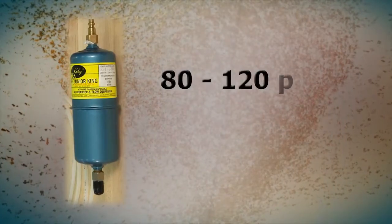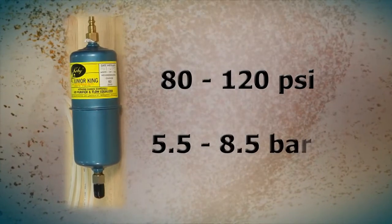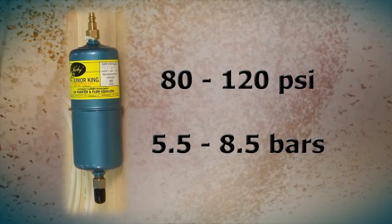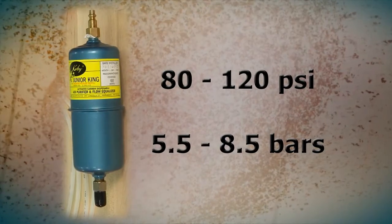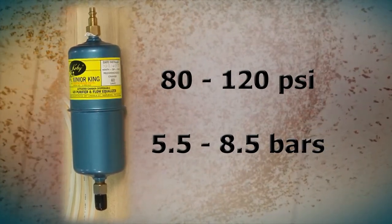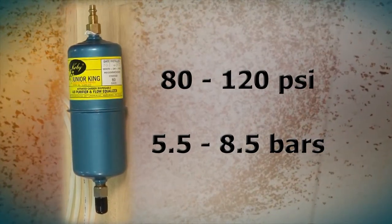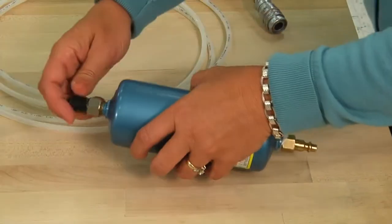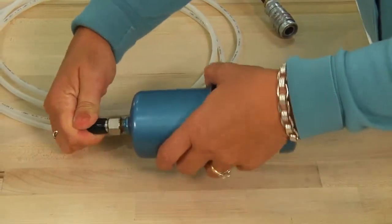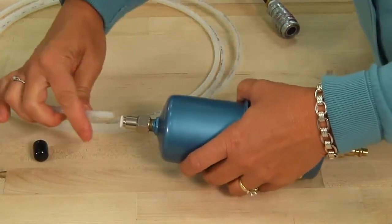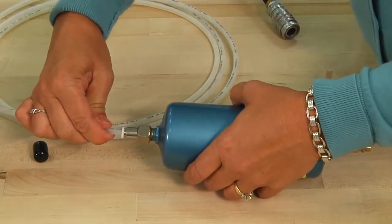First, hook up your air supply. Your polishing machine requires 80 to 120 PSI of clean, dry air or 5.5 to 8.5 bars. The Kobe air filter is set up on one end to hook directly to the polishing machine with the supplied quarter inch air tubing.